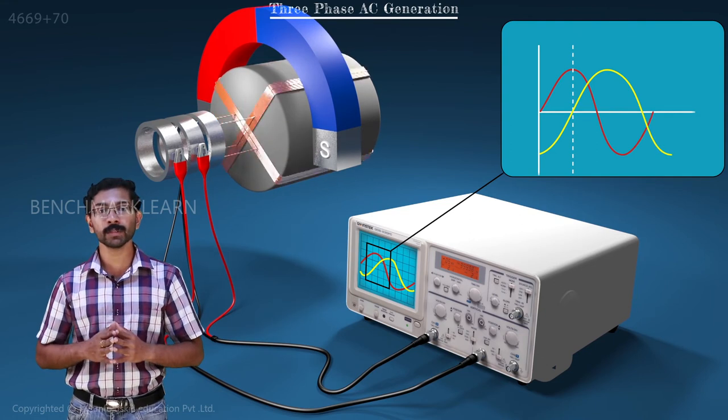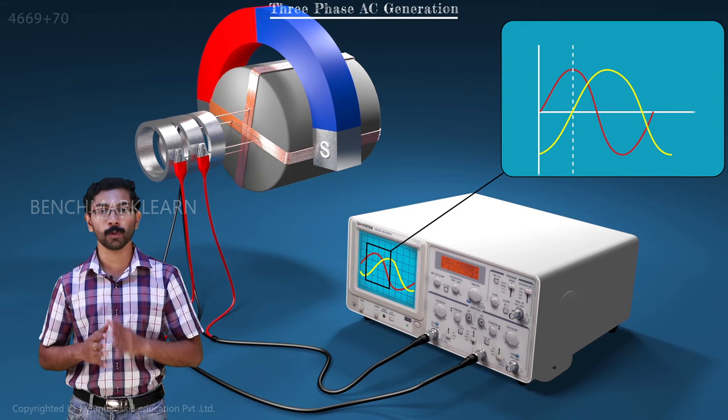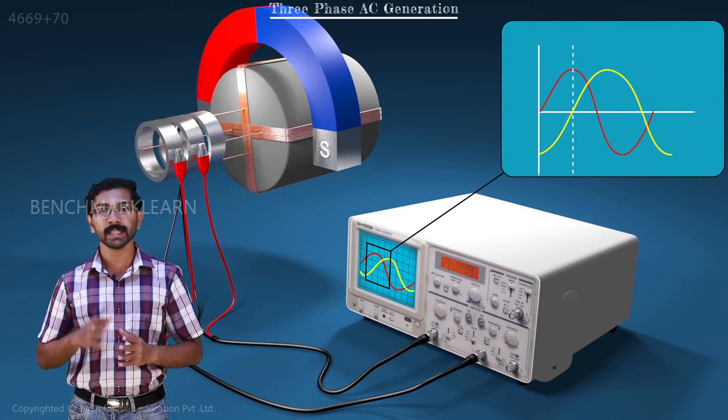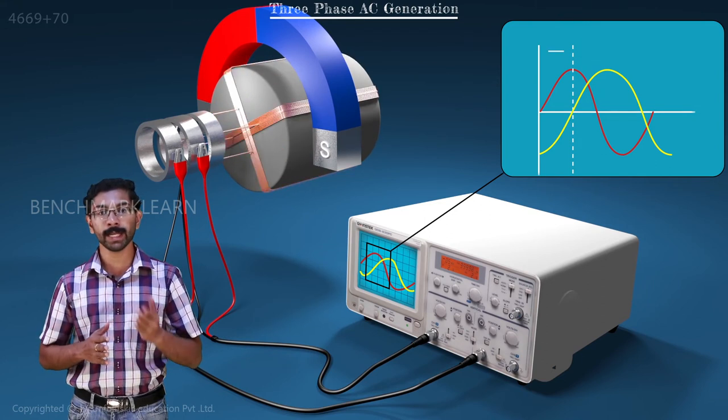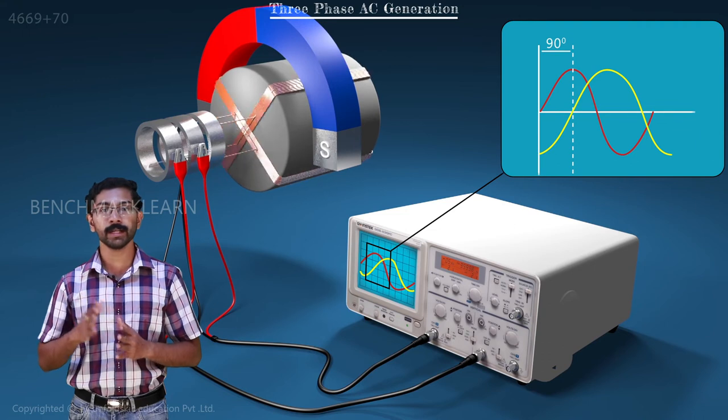And hence, the EMF induced in the coil will also be zero. This means that there is a phase difference of 90 degrees between the generated EMFs, when the coils are separated in space by 90 degrees.